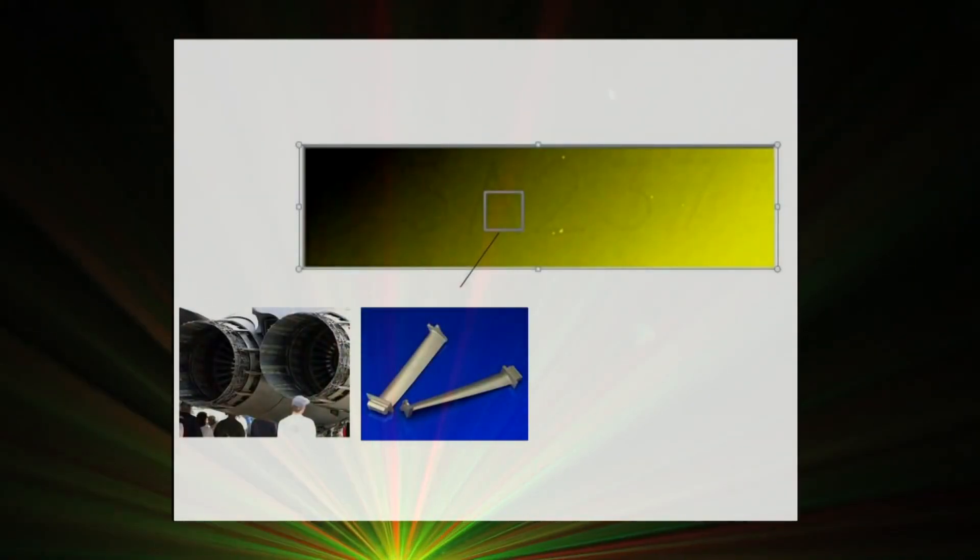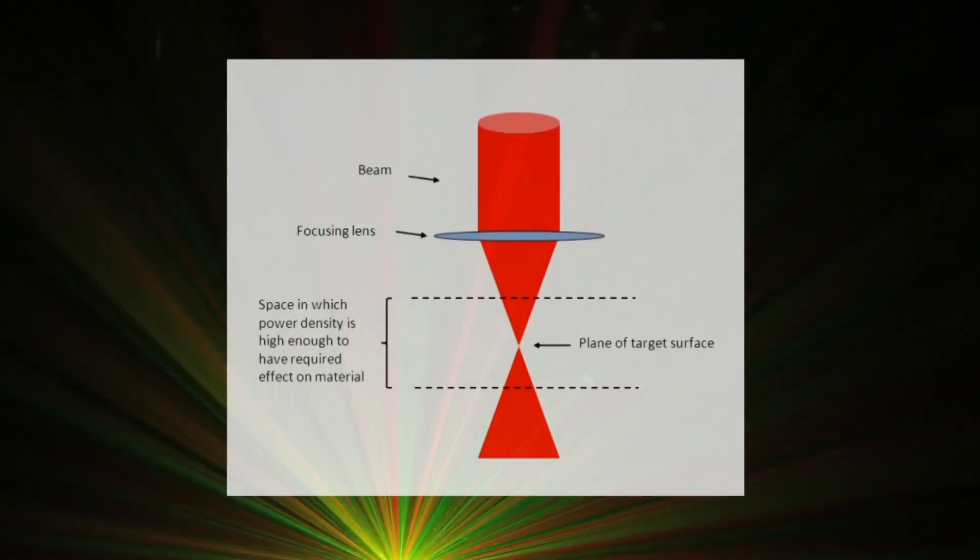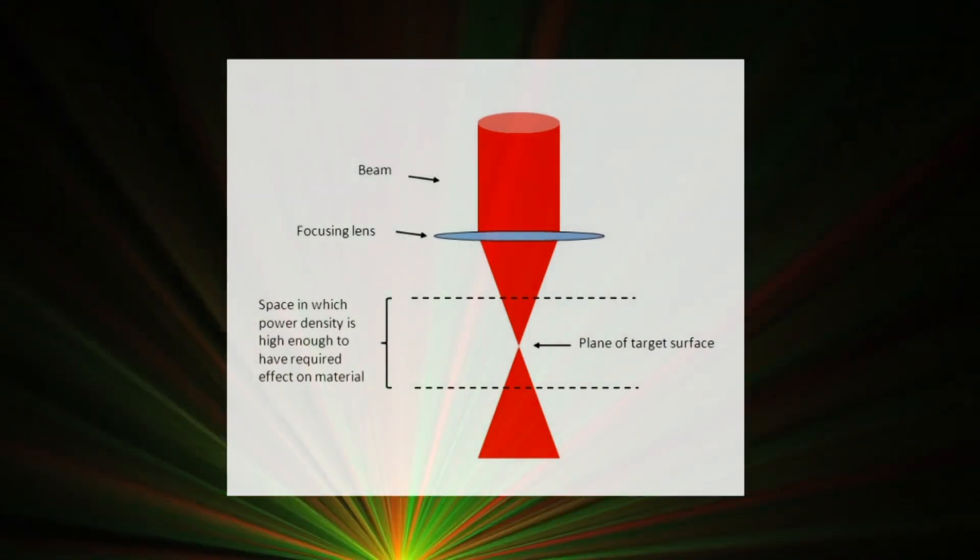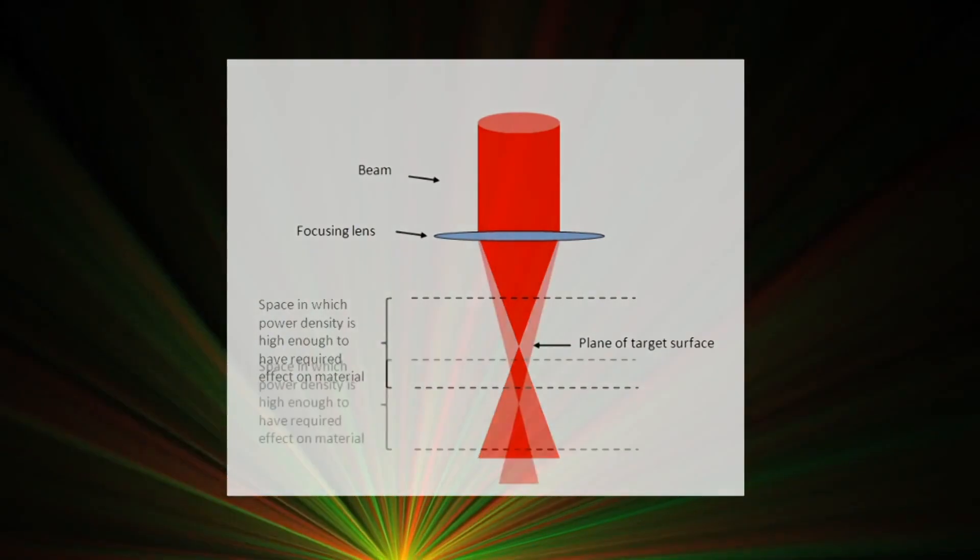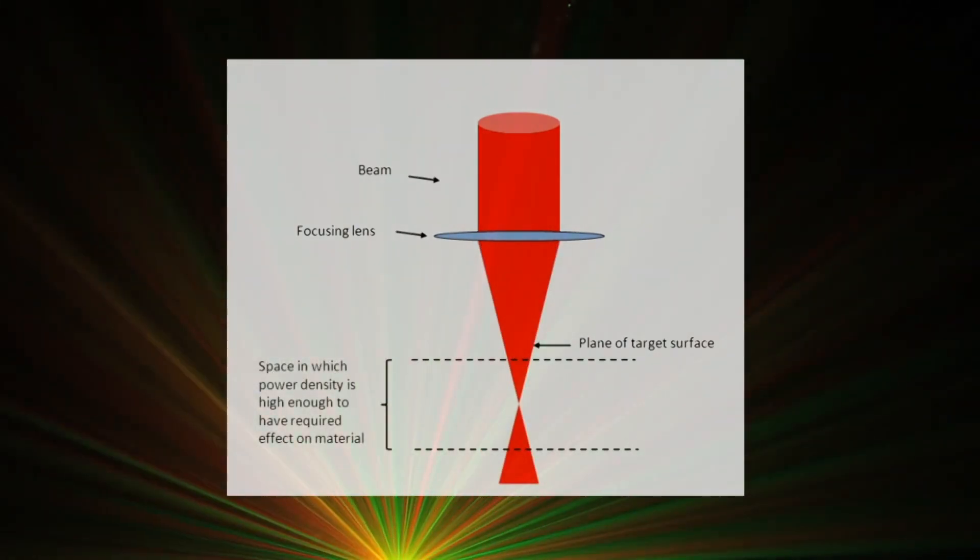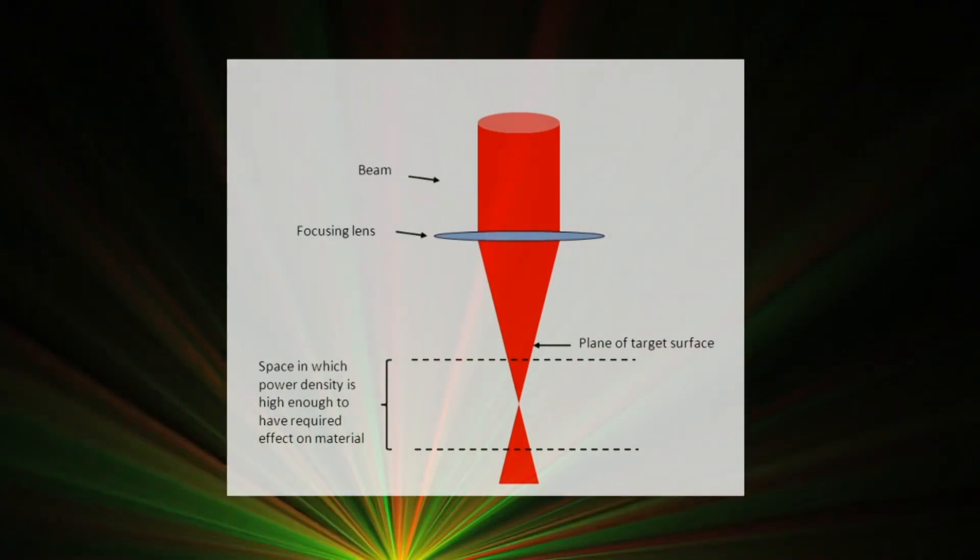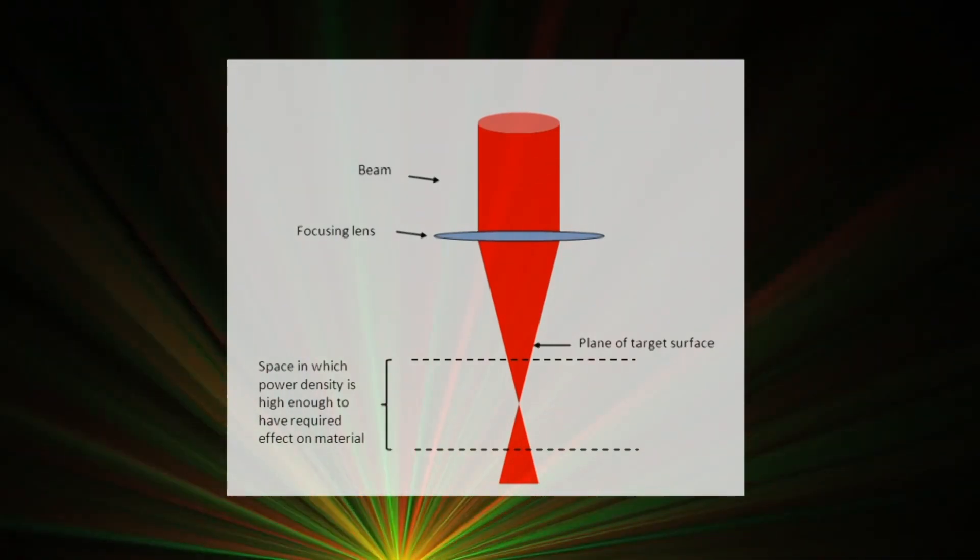With ever-increasing power levels in today's industrial laser beams, heating effects on the laser's optical components, such as a focusing lens or a window, can cause a shift in the focal point location, moving it closer or farther away. It's easy to see how such a focus shift can critically change what the process is doing and where it's doing it.